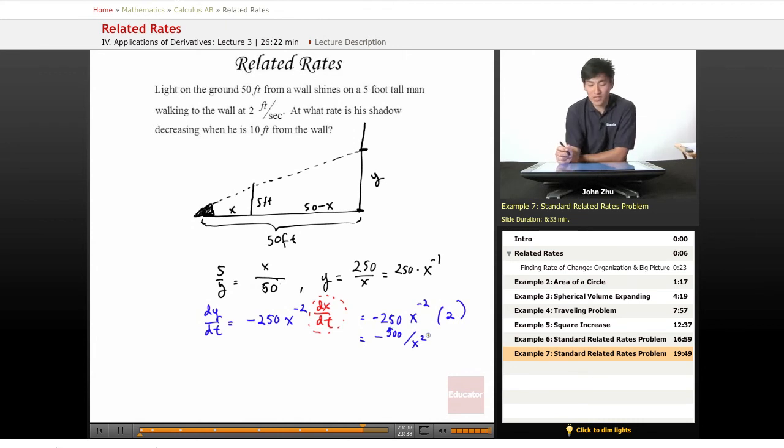Now we have this expression for dy dt and x squared, and we're looking for the rate at which his shadow is decreasing. So we're looking for dy dt. This is what we're looking for.